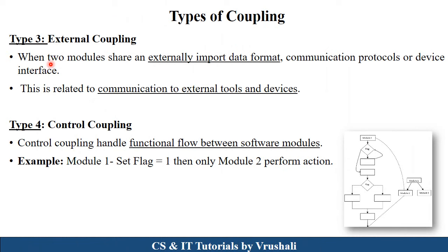The next type is external coupling. When two or more modules in one project access the same type of external tools and devices — for example, they use the same external library file, import file, different communication protocols, or device interfaces — this is called external coupling.